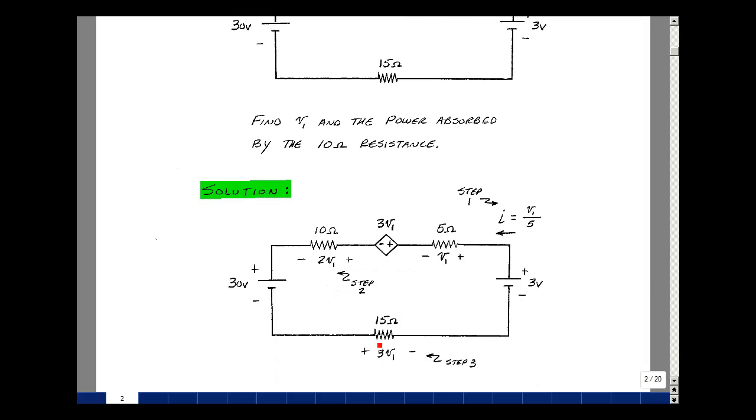That same current comes around this way and becomes another drop of 15 times I1, which would be V1 over 5. That would be 3V1.